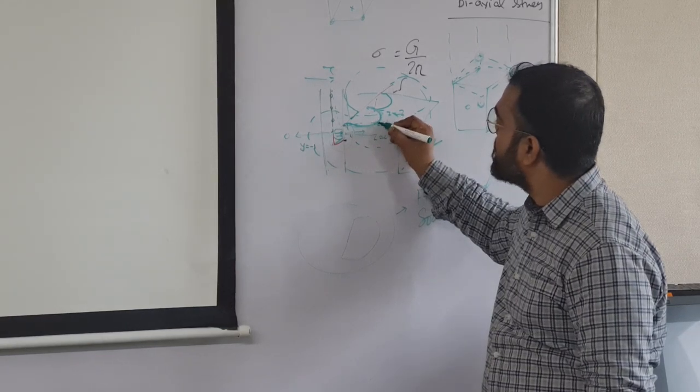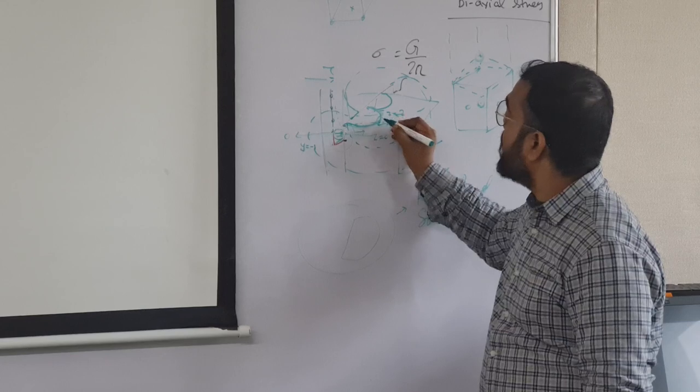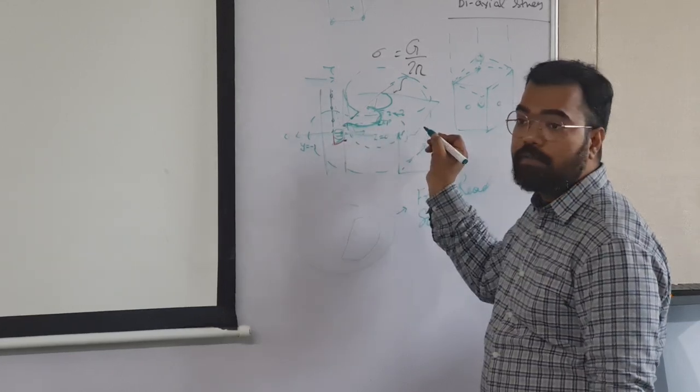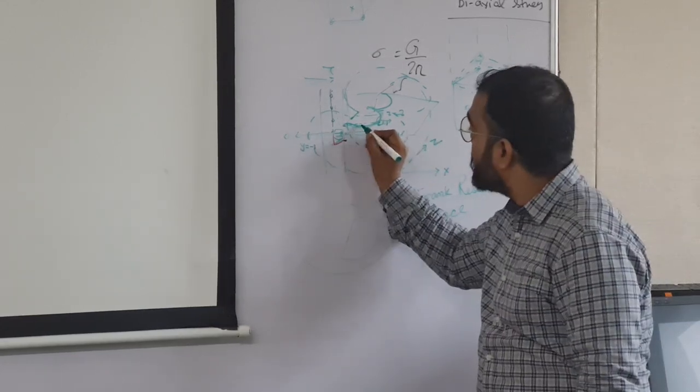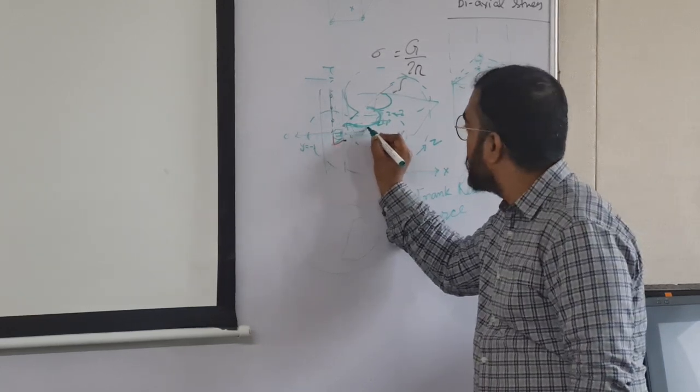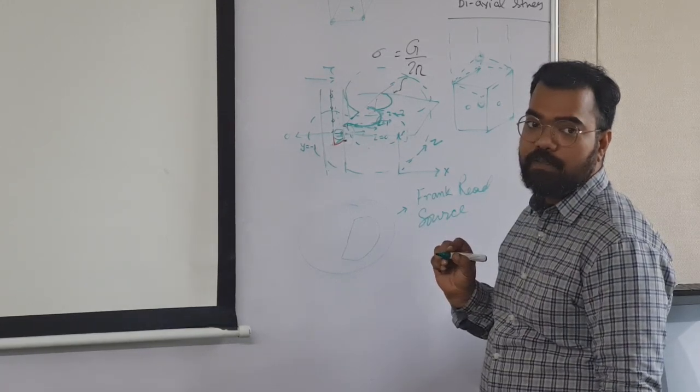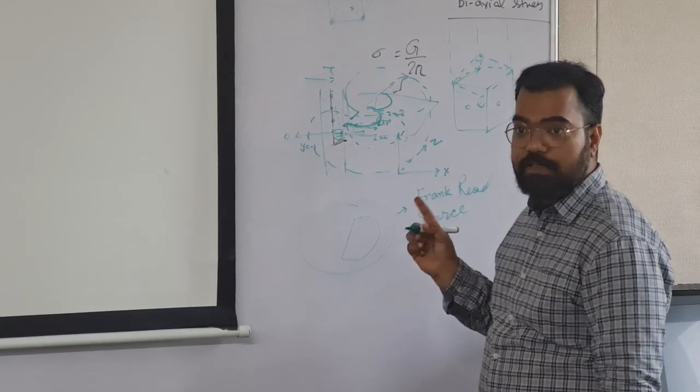That is the dislocation line and that is the Burgers vector, so that is edge. What is happening here? Dislocation line and Burgers vector, so that is a screw dislocation, so it is a mixed dislocation.